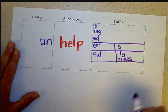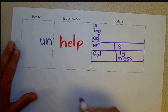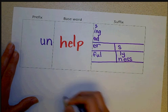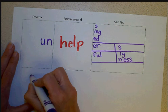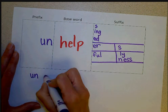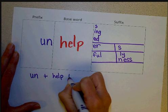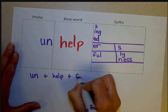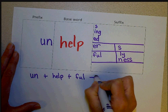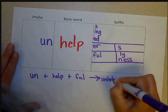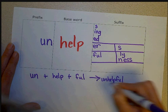And then of course, the opposite of helpful would be unhelpful. So we can add that prefix there. So with each of these, as we wrote them, the students would write a word sum. So if we wanted to write unhelpful, it would be U-N plus H-E-L-P plus F-U-L is rewritten as U-N-H-E-L-P-F-U-L, unhelpful.